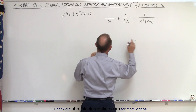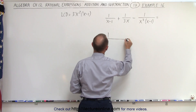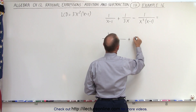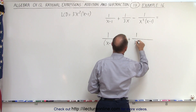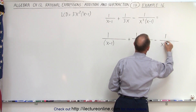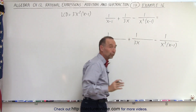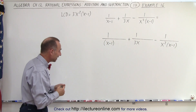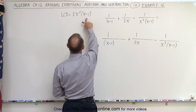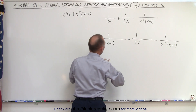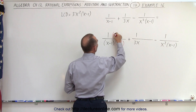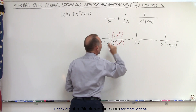We're going to change each of the denominators to that lowest common denominator. So when we rewrite this, we write this as 1 over x minus 1, plus 1 over 3x, and minus 1 over x squared times x minus 1. All three denominators are missing at least one factor. The first has x minus 1 but is missing the 3x squared, so we're going to multiply this by 3x squared. And we must multiply the numerator by the exact same thing.